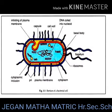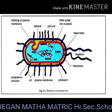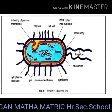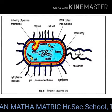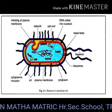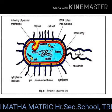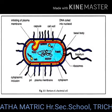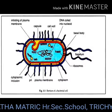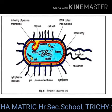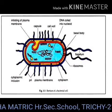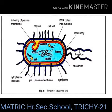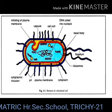Next we are going to study about the structure of a bacterial cell. The bacterial cell reveals three layers: capsule, cell wall, and cytoplasm. Some bacteria are surrounded by a gelatinous substance composed of polysaccharide and polypeptide. A thick layer of glycocalyx bound tightly to the cell wall is called the capsule.